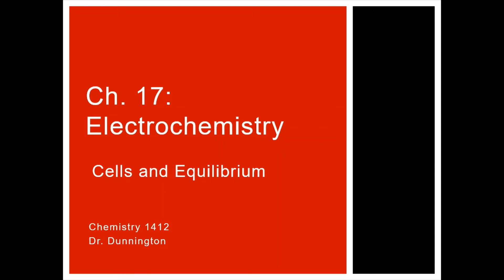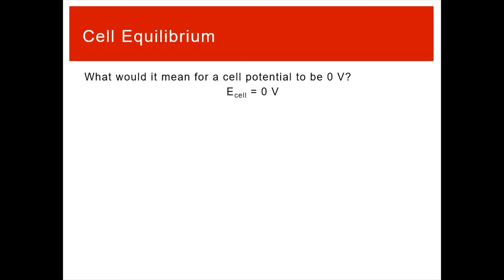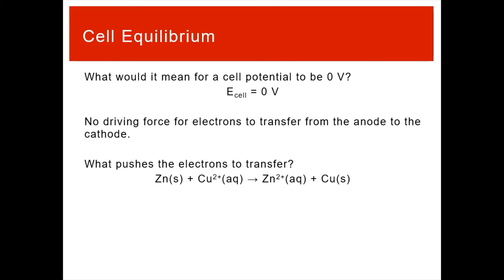Now we want to generalize some of these ideas that we've kind of started with the Nernst equation by talking about cells and equilibrium. So what would it mean for a cell potential to be zero volts? E_cell equals zero volts. That would tell us that there's no driving force for electrons to transfer from the anode to the cathode. What is the driving force that normally pushes electrons? Chemistry. The chemical reaction normally is occurring, reactants are becoming products.